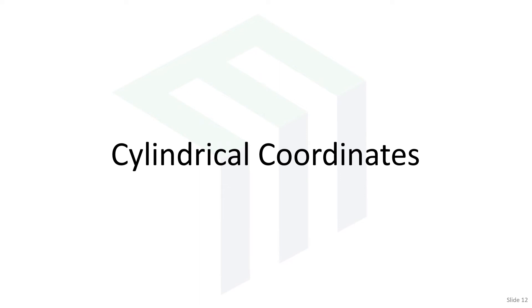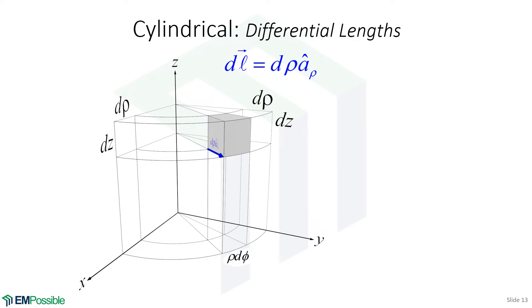Cylindrical coordinates. We're going to do everything we just did in Cartesian coordinates for cylindrical coordinates. We draw our cylindrical coordinate system and define a differential volume, from which we will define our differential lengths, differential areas, and then the differential volume. The first differential length is along the rho direction. Differential length is a vector with a magnitude and direction. The magnitude is our differential d-rho, and the direction is our unit vector in the rho direction.